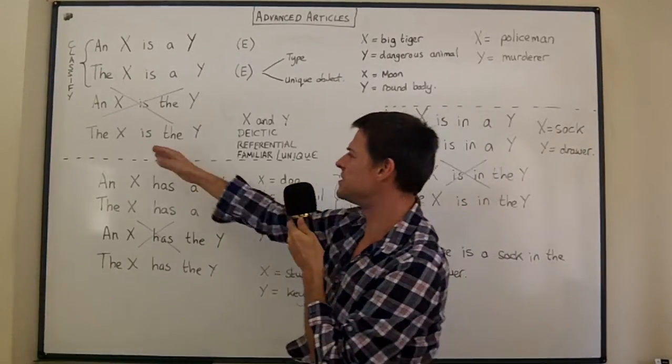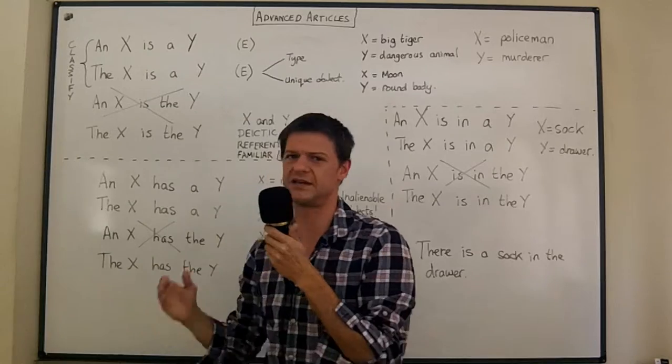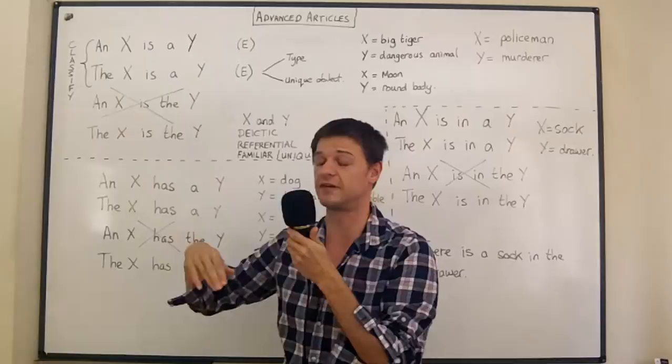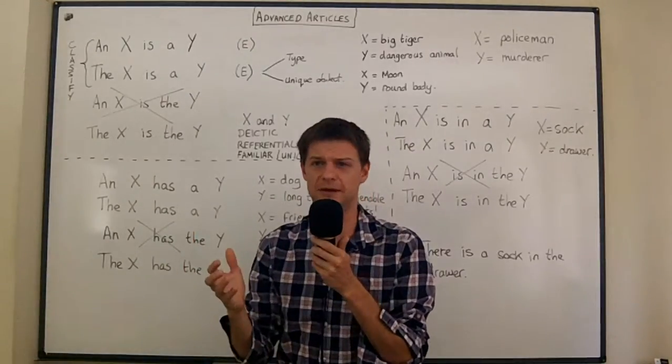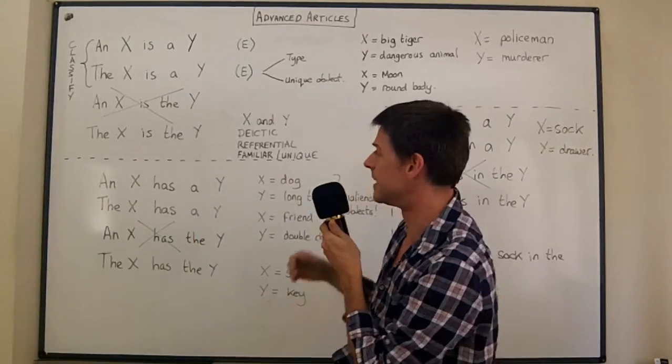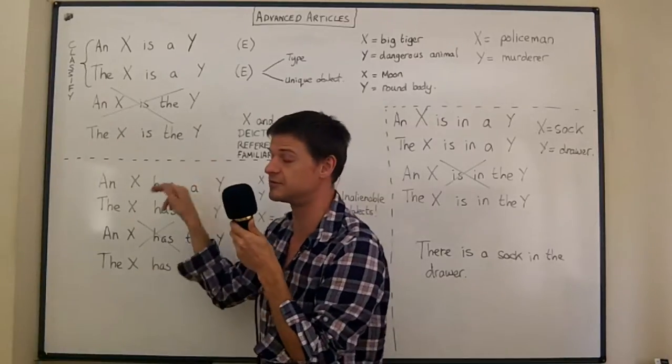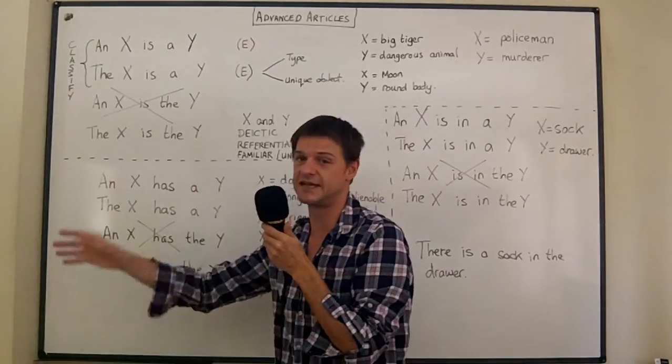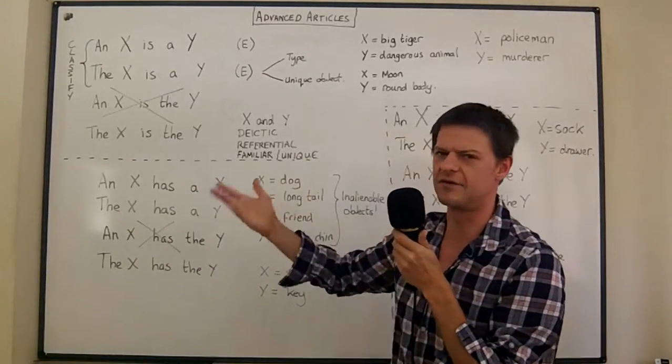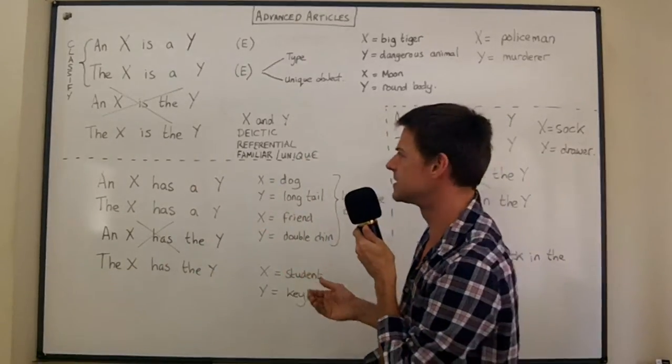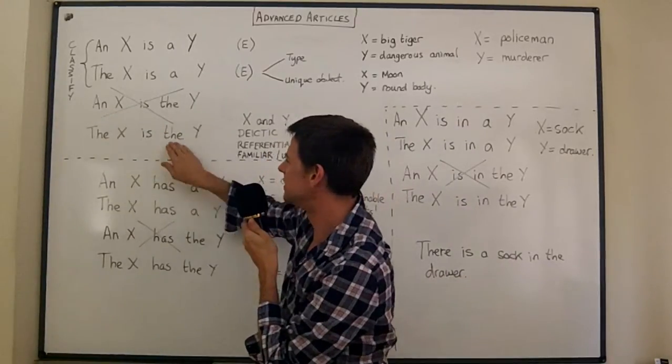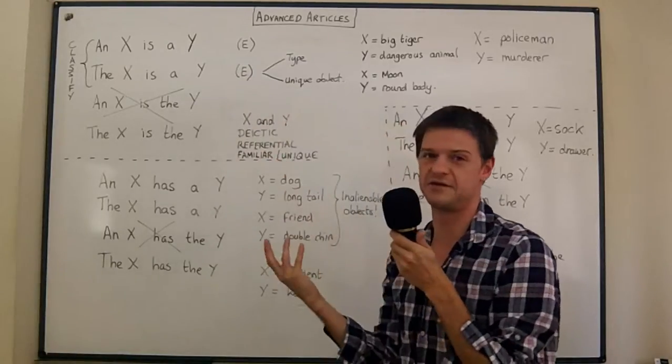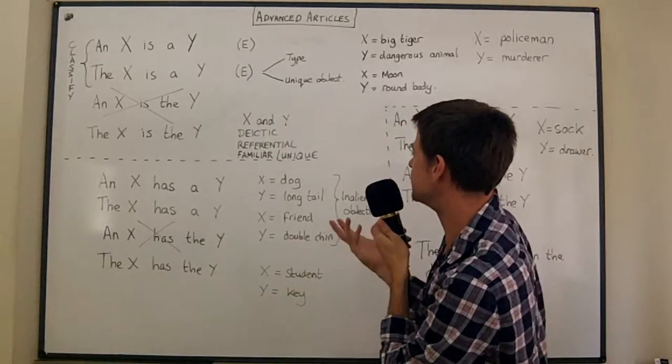When you say the moon is the round body it sounds like all the other moons are perhaps cubic or tetrahedral. But the moon is a round body. It is the round body. The moon is the round body and it's not the tetrahedral body or the other bodies which you already know about. And basically it's just not going to happen because the round body is too indefinite. It's not a defined thing.